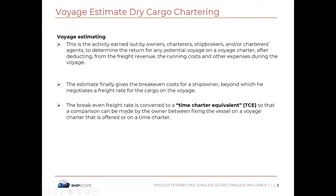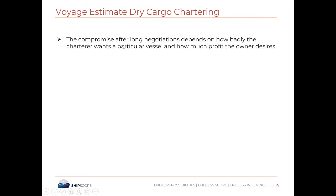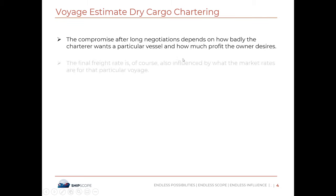The estimate gives the breakeven cost for a shipowner, beyond which he negotiates a freight rate for the cargo on the voyage. The breakeven freight rate is converted to a time charter equivalent so that comparison can be made between fixing the vessel on a voyage charter or a time charter. The charterer uses the voyage estimate differently — he estimates what various owners will face in cost and their likely breakeven points, so he can begin negotiations from a lower level and find a cheaper vessel. The compromise after negotiation depends on how badly the charterer wants a particular vessel and how much profit the owner desires, and the final freight rate is also influenced by market rates for that particular voyage.